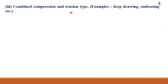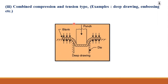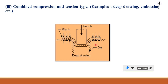The third category is combined compression as well as tension, with the example being deep drawing. If you want to make a cup-shaped product using sheet metal, it requires a combination of compression and tension. A die is selected according to the required shape and cross-sectional area, the blank is placed onto the die, and with the help of lowering a punch with some clearance between the punch and die, the material is elongated. Both compression and tensile forces are applied to convert into the desired cup shape and size.